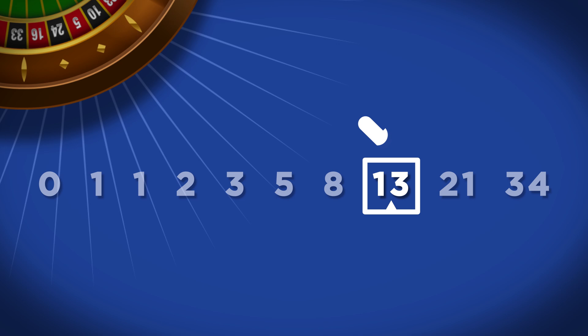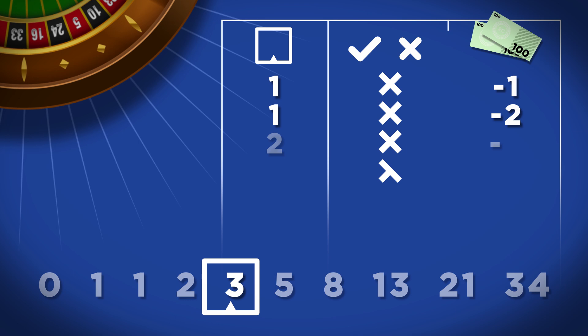The idea is that when you lose, you move one up through that set sequence. When you win, you move two down the sequence.